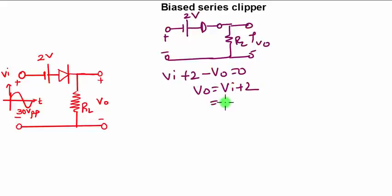VI plus 2 minus VO equals 0, that means VO is VI plus 2. Initially your VI will become 0, 0 plus 2 will be 2 volts. Then minus 1, minus 1 plus 2 will be 1 volt. Then minus 2 plus 2 will be 0 volts. This is the point till which the diode is forward biased.